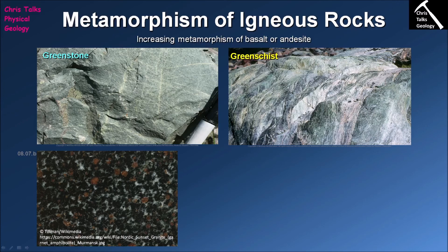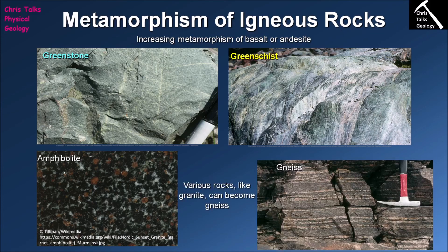As we increase pressure and temperature, chlorite, epidote, and actinolite are going to begin to become unstable, disappearing from our metamorphic rock and being replaced by a new mineral: hornblende, the black mineral seen here. This transition from rocks rich in epidote, actinolite, and chlorite to rocks rich in hornblende — a type of amphibole — shows the metamorphic grade is steadily increasing. We've moved to a medium-grade metamorphic rock in the form of amphibolite, which has a distinctive salt-and-pepper texture and tends to contain garnet, visible here as red crystals.